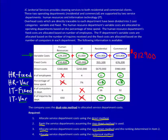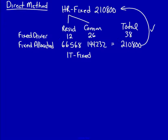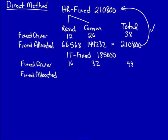The fixed driver is 16 and 32. 185,000 fixed driver: 16 plus 32, total 48. Fixed allocated: 16 divided by 48 multiplied by 185,000 equals 61,667. And 123,333.